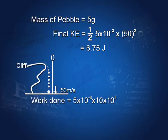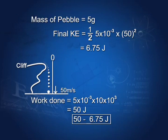From the cliff, we can find the work done by gravity: W = mgh = 5 × 10⁻³ kg × 10 m/s² × 10³ m = 50 joules. So we have 50 joules of work done by gravity but only 6.75 joules of kinetic energy — there is a significant loss. That lost energy, 50 − 6.75 joules, must be the work done by the resistive air forces, which we could not have calculated directly. We could not have found this unless we used the work-energy theorem.